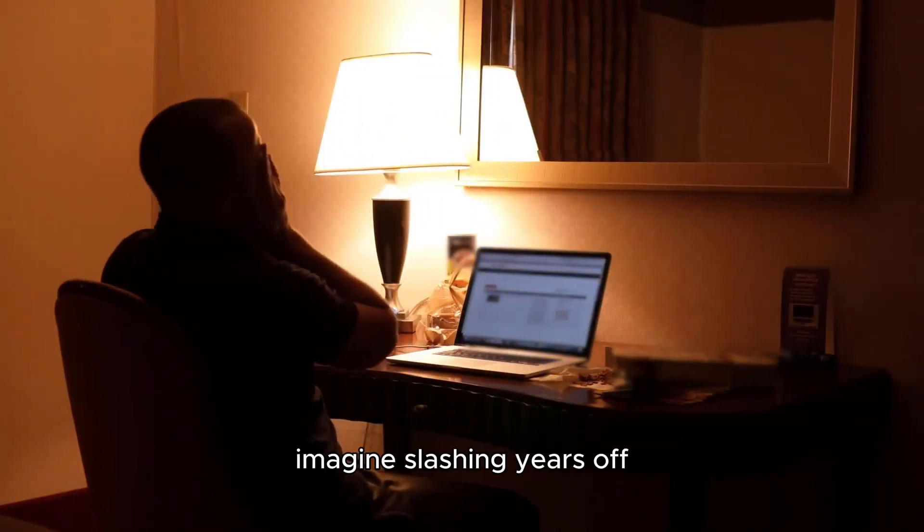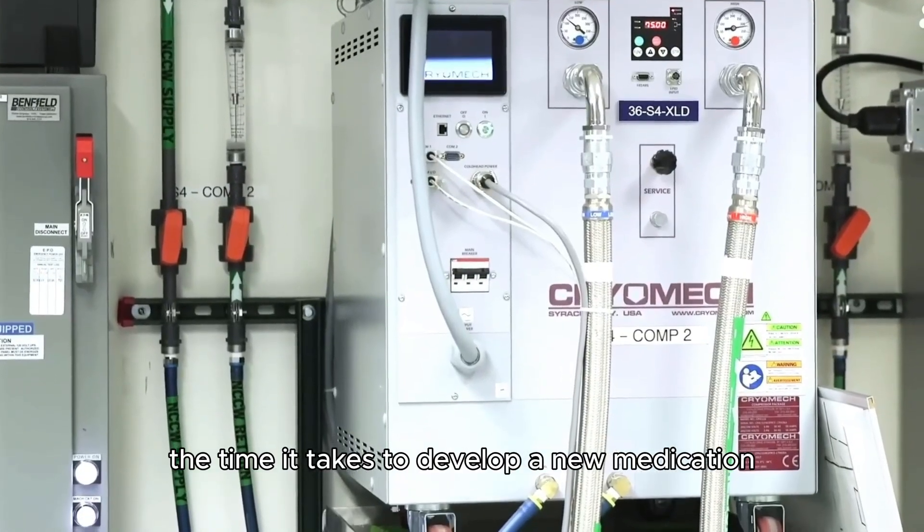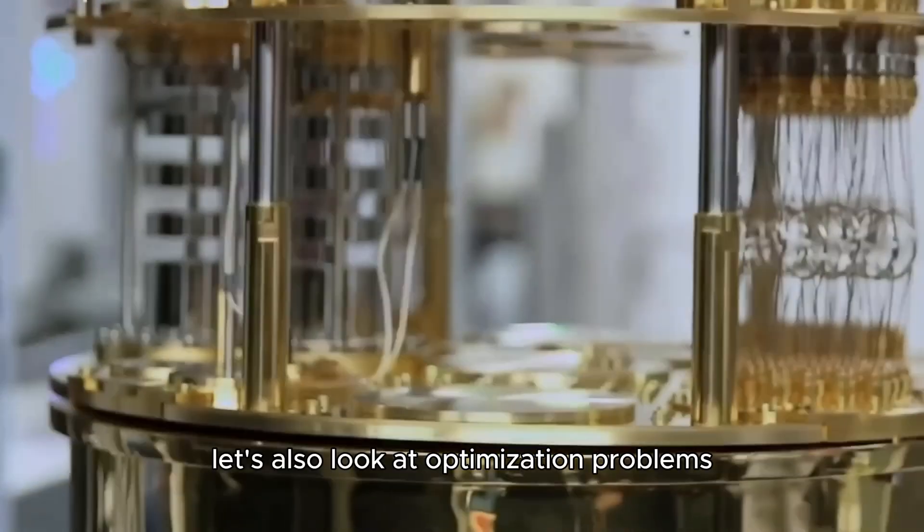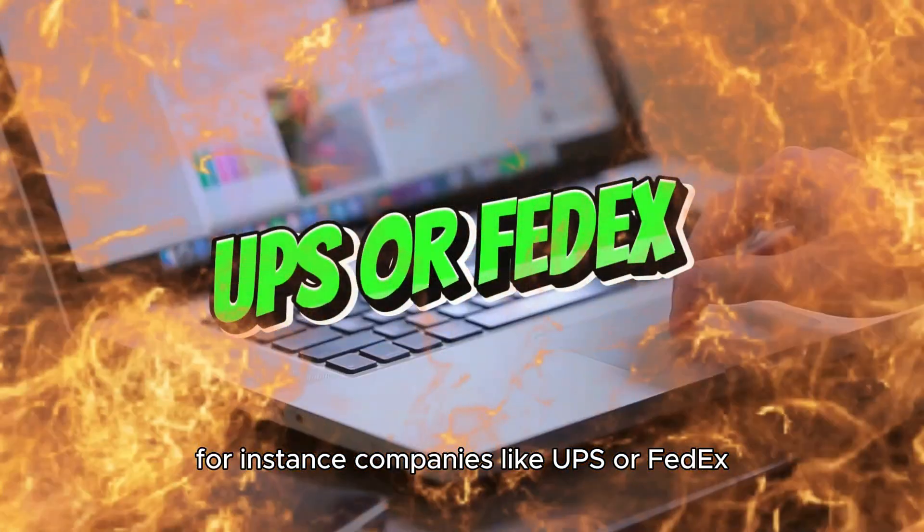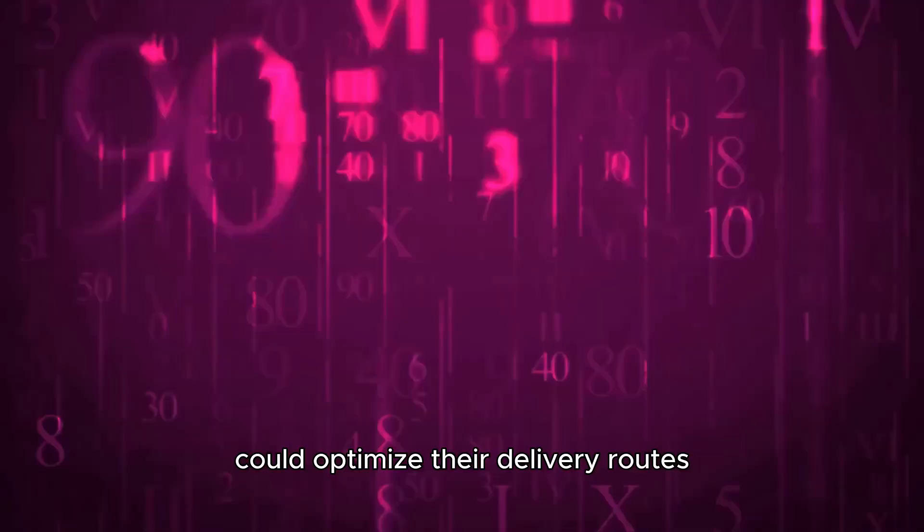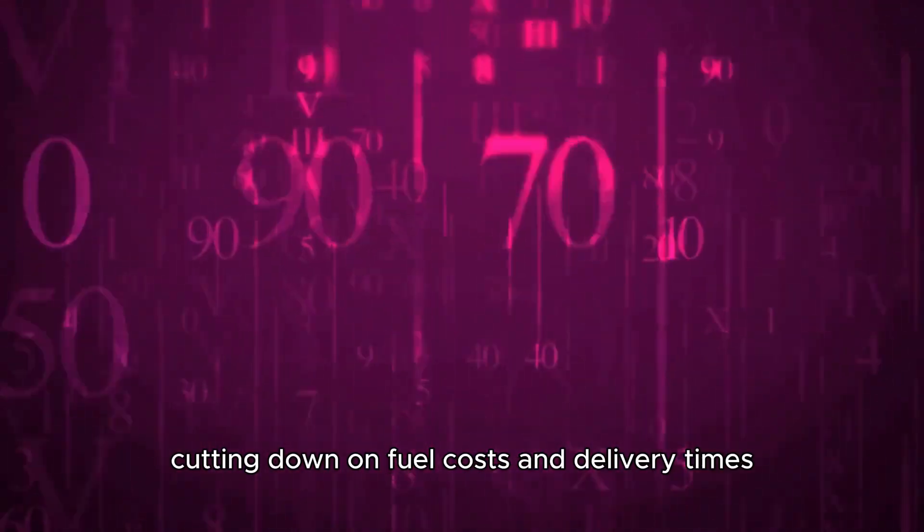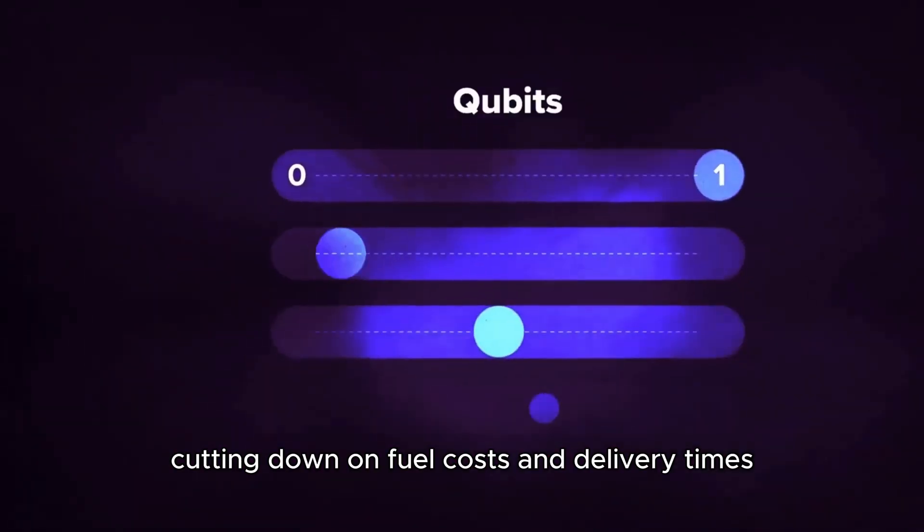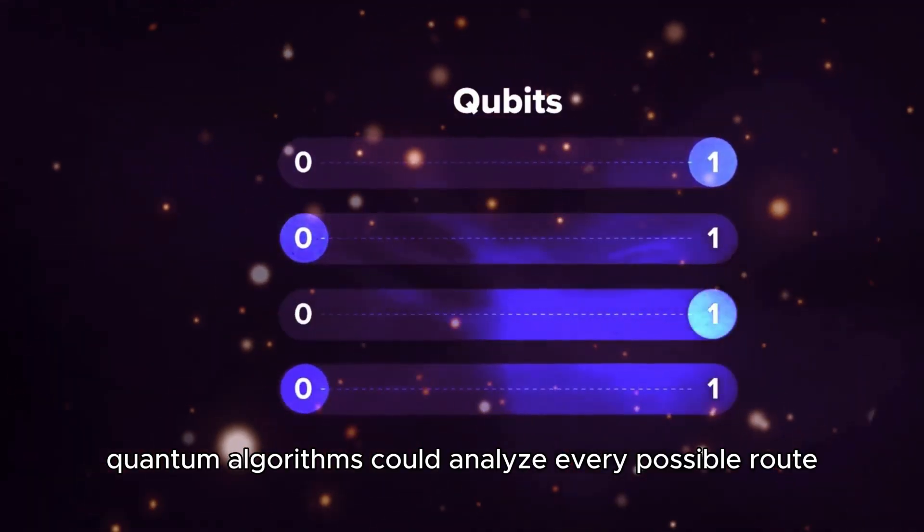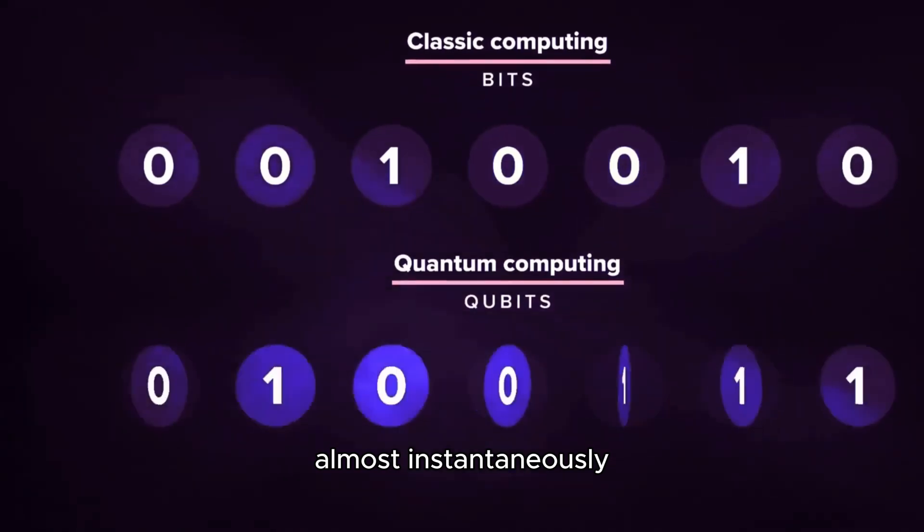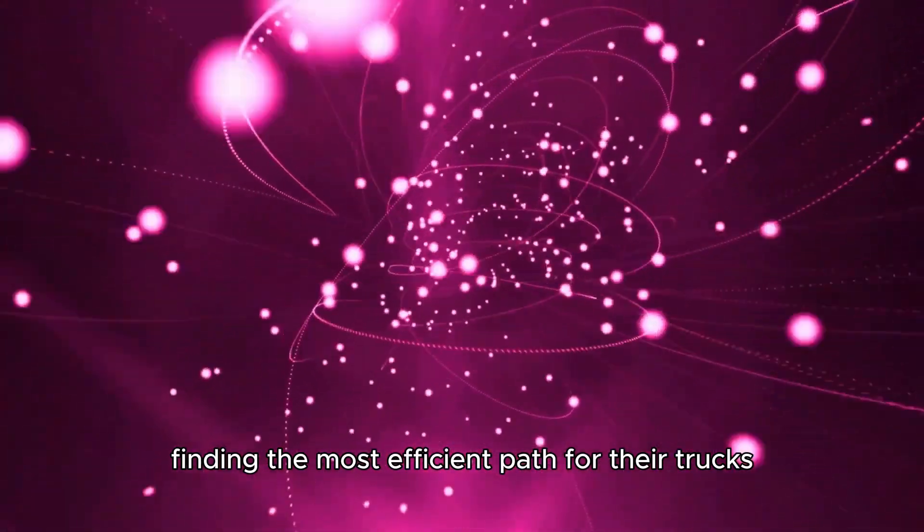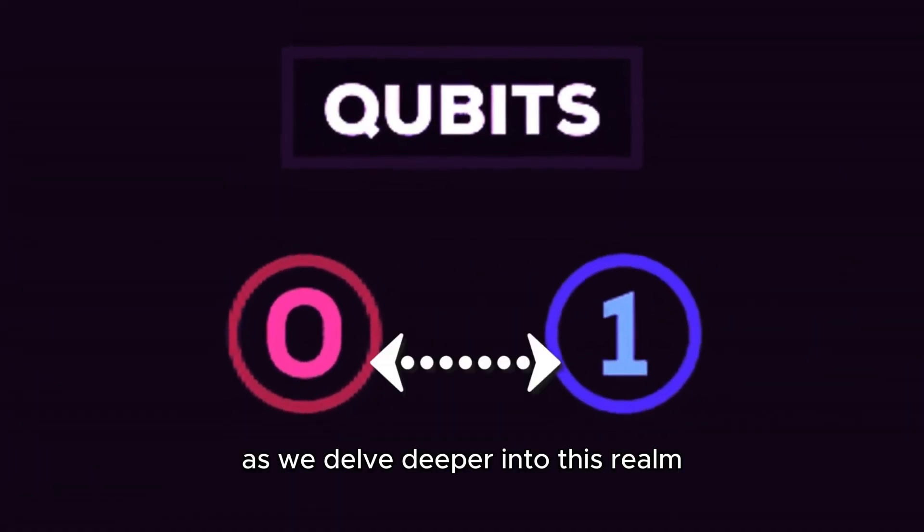Imagine slashing years off the time it takes to develop a new medication. Let's also look at optimization problems. For instance, companies like UPS or FedEx could optimize their delivery routes, significantly cutting down on fuel costs and delivery times. Quantum algorithms could analyze every possible route almost instantaneously, finding the most efficient path for their trucks.